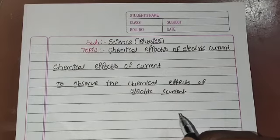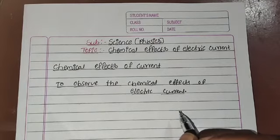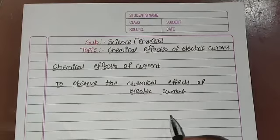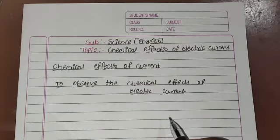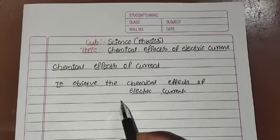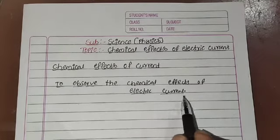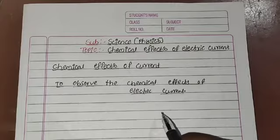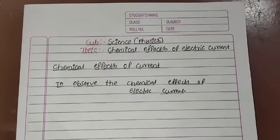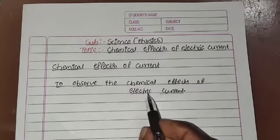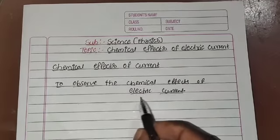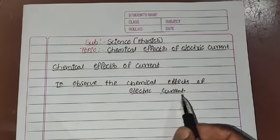This means when an electric current passes through a chemical substance, chemical changes will occur. To observe the chemical effects of electric current, we conduct one activity. By this activity, we can easily observe the chemical effects of electric current.